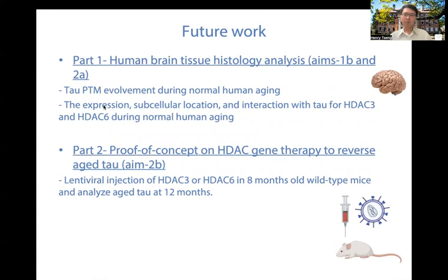There are two parts of future work for this project. In part one, I will analyze human brain tissue to see if the findings in mice also exist in humans, and I will analyze several potential mediators for H-Tau in humans at different time points. In part two, I will provide proof of concept on HDAC gene therapy to reverse H-Tau, involving lentiviral production and injection into wild-type mice. Hopefully, this time next year, I will show you more exciting updates.